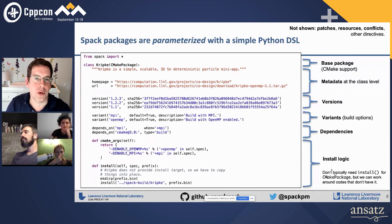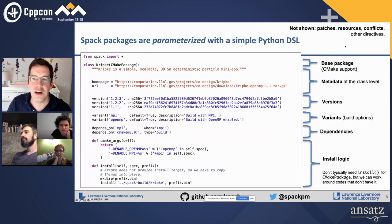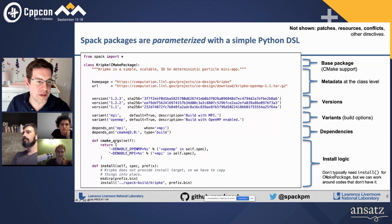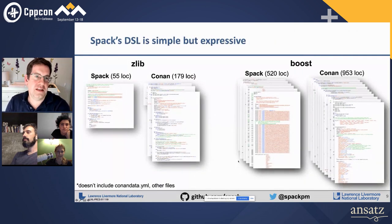Packages are parameterized with a simple Python DSL. Every package is a class — it has a homepage and a URL, similar to a Homebrew package. But you can have multiple versions, build options, conditional dependencies, and version ranges. The install logic is templated by these parameters: the top section defines the space of things you could install, and the bottom section is how to install it. It's simple but expressive.